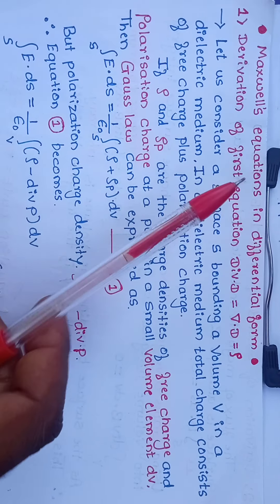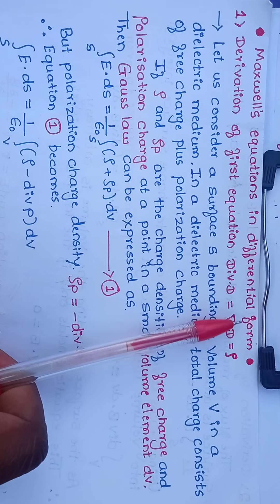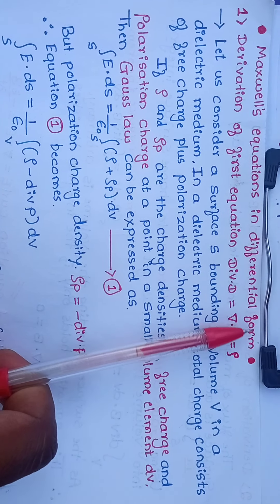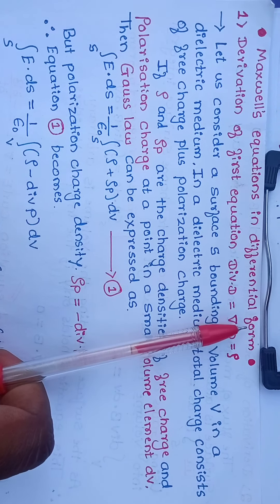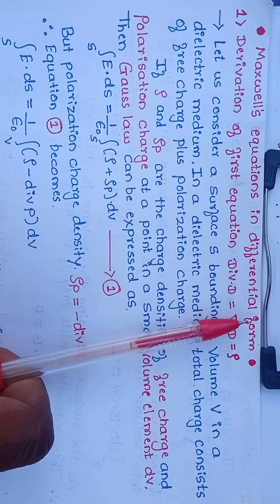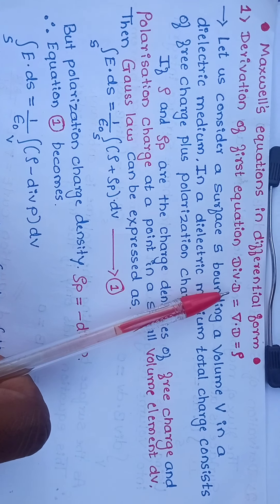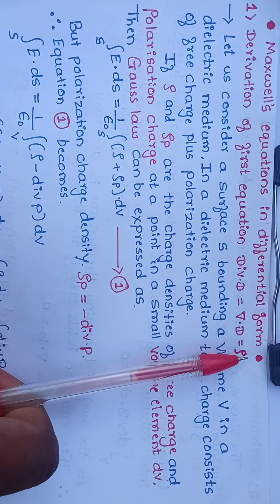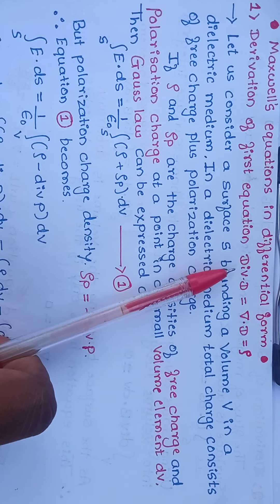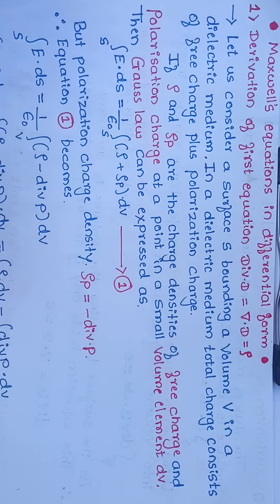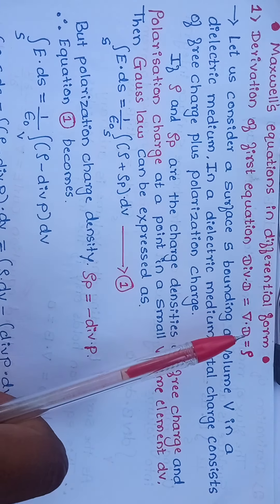See here Maxwell's equations in differential form. There are four Maxwell differential equations. The first one is del dot D equal to rho, that is divergence of D equal to rho.